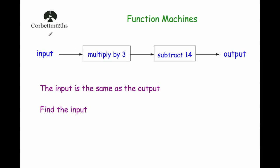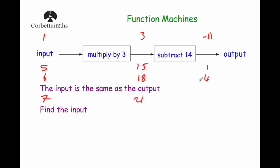Using trial and improvement: try input = 1 → 1 times 3 is 3, subtract 14 is −11. Not the same. Try 5 → 5 times 3 is 15, subtract 14 is 1. Closer but not equal. Try 6 → 6 times 3 is 18, subtract 14 is 4. Getting closer. Try 7 → 7 times 3 is 21, subtract 14 is 7. The input equals the output, so the input is 7.